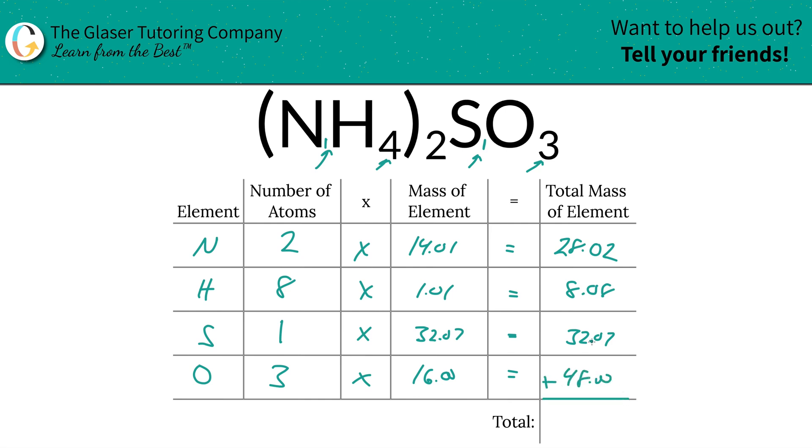Then to find the total mass of the compound, which is what we're interested in, got to add this whole column up. So that's 116.17 units of mass, and since we're solving for molecular mass, the units here are in AMU, atomic mass units.